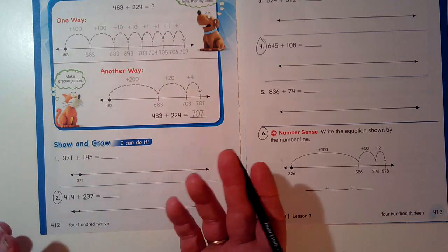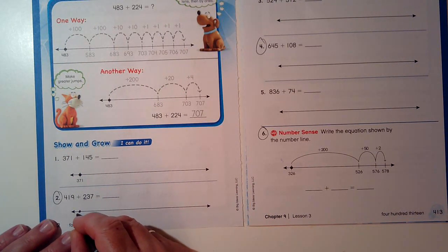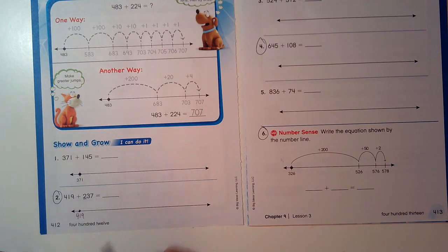It's up to you. So these are examples that you can use. Alright, 419 on my open number line. I don't have to start at zero.